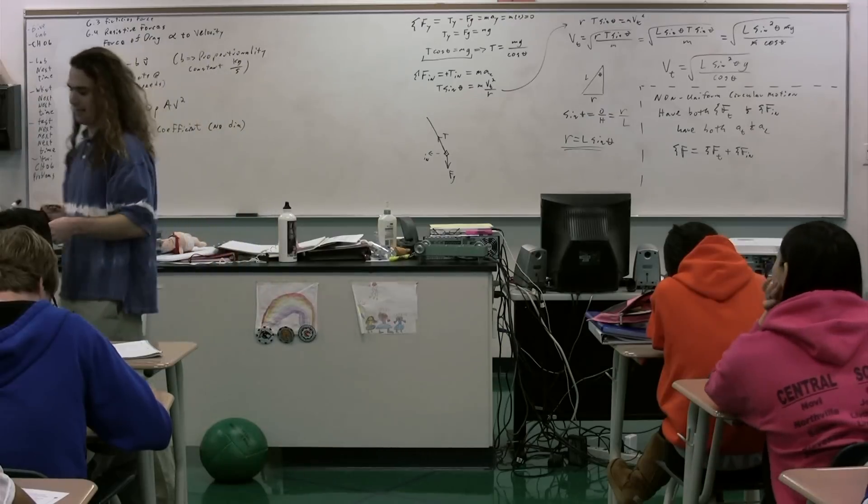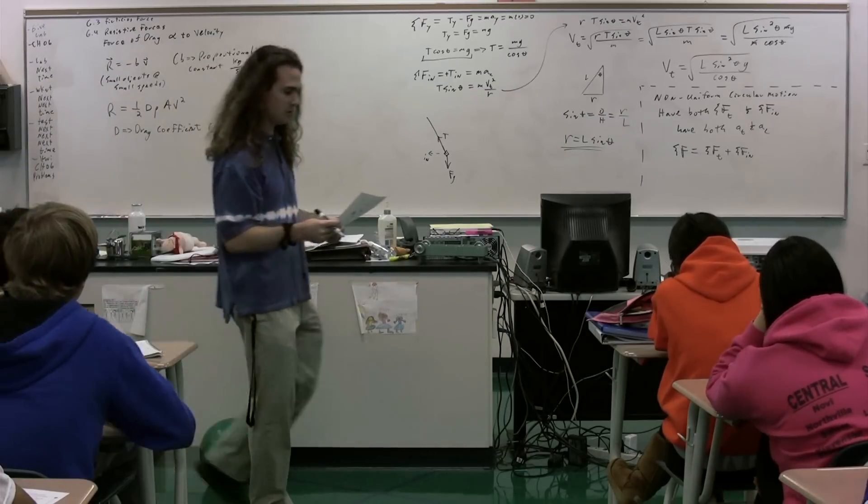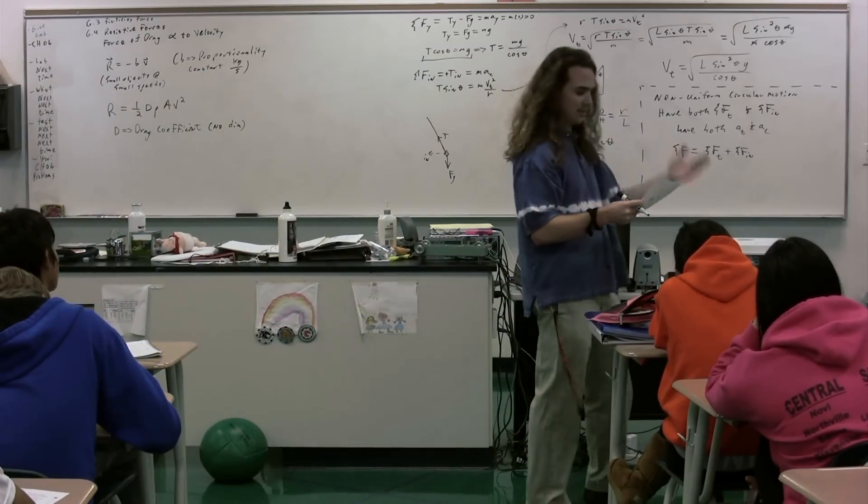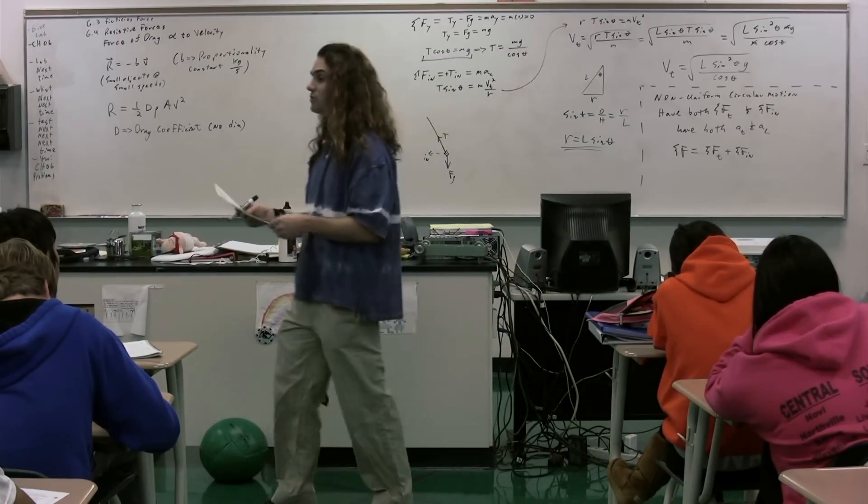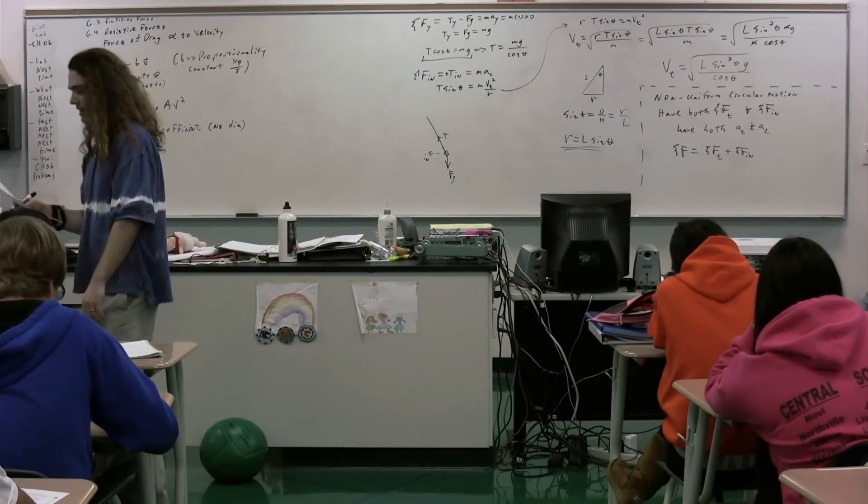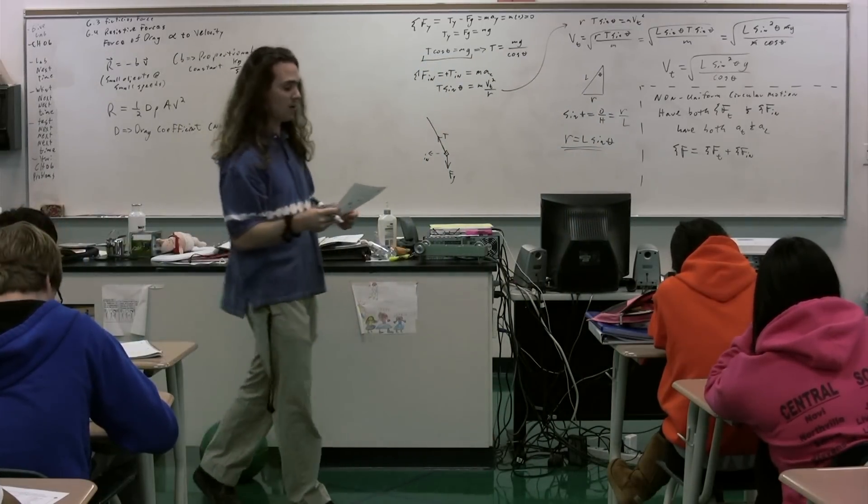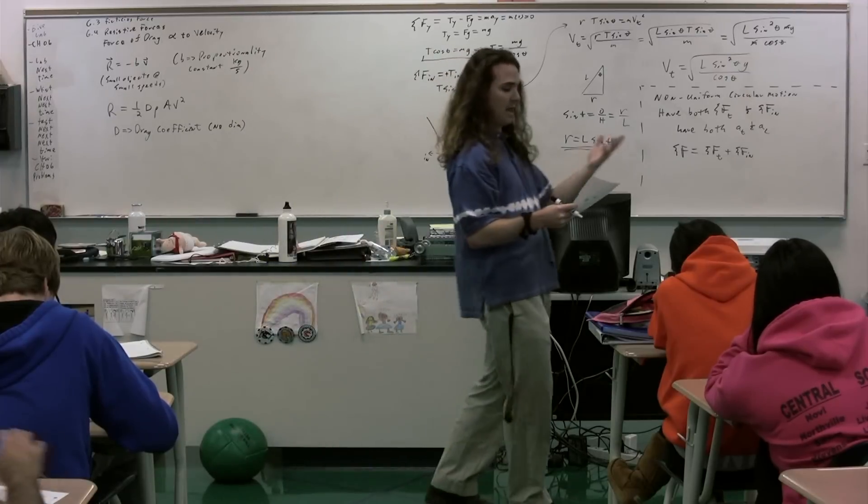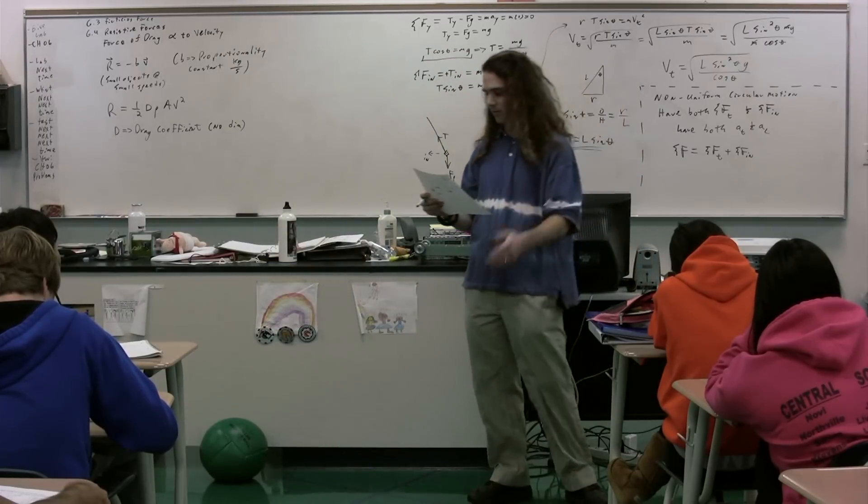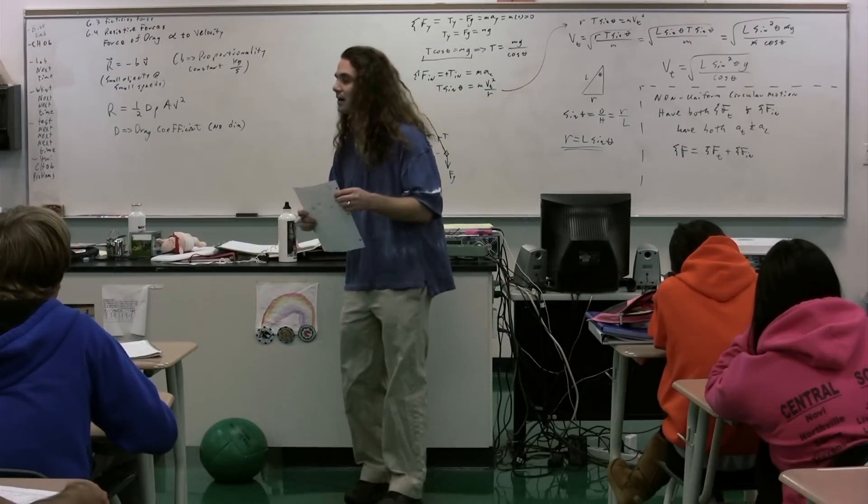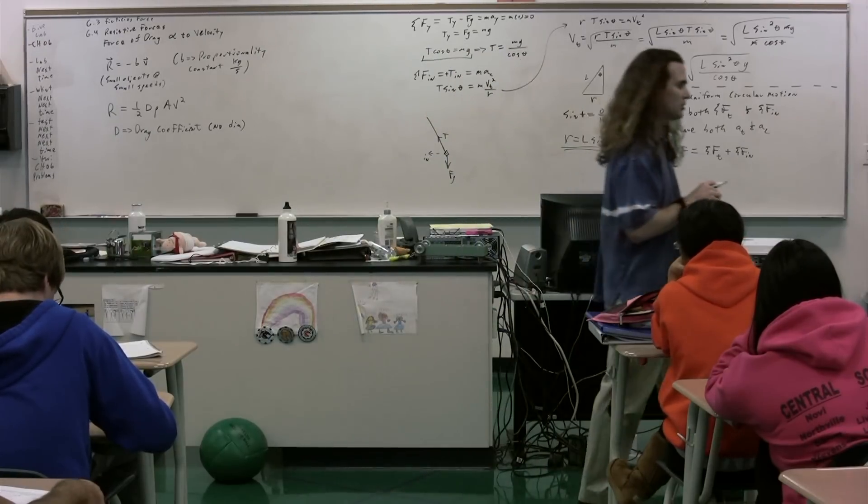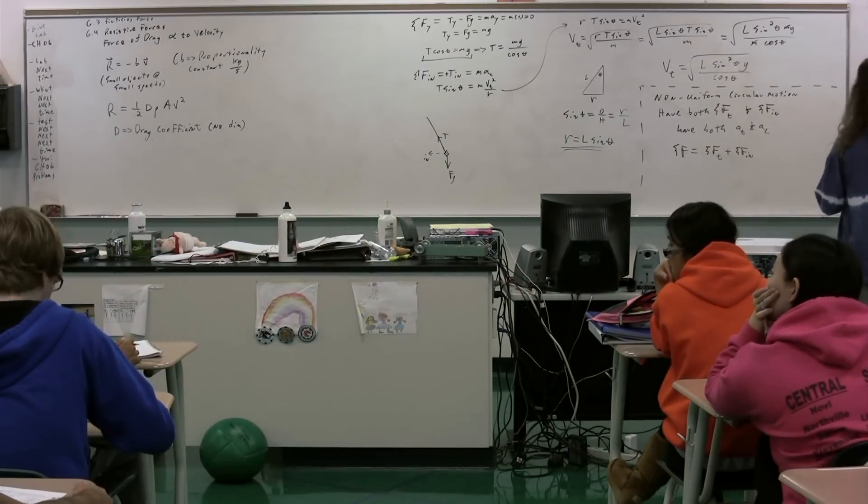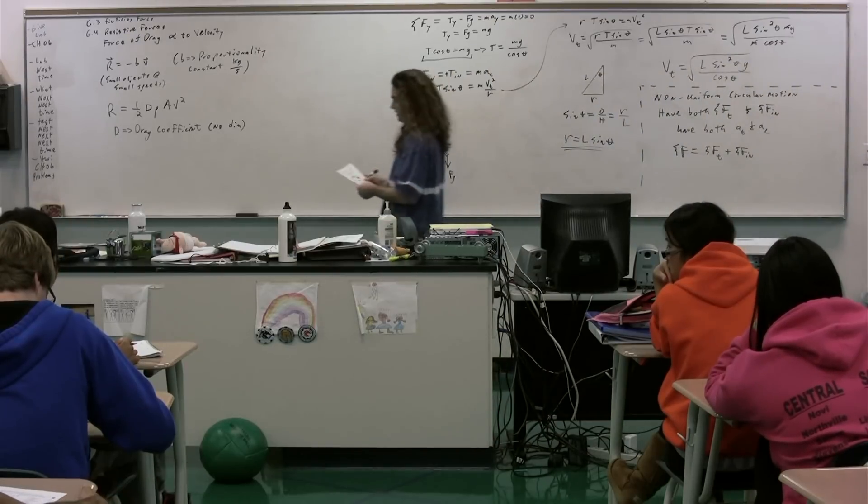You can look up all sorts of different drag coefficients on the web. For example, a flat plate has a drag coefficient of approximately 1.28. A bullet, depending on the shape, about 0.295. A sphere, depending on the material, is anywhere from 0.07 to 0.5. A wing of an airplane is, depending on the wing, about 0.045. So the drag coefficient is really just dependent on the shape and the material of the object.